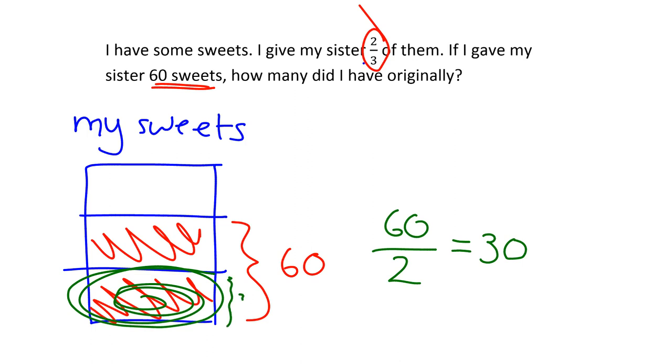So this little piece here is 30. But that's still not what I want. What I wanted to know was how many I had originally. In other words, I want to get back to my original. Well, my original is made up of one, two, three of the thirds. One, two, three of them.